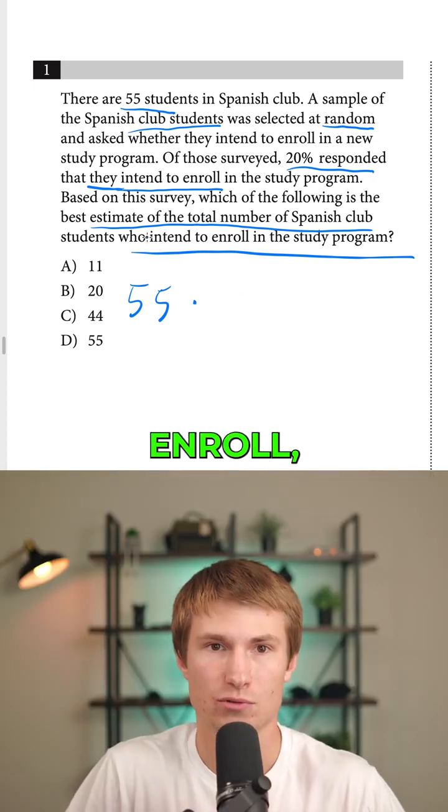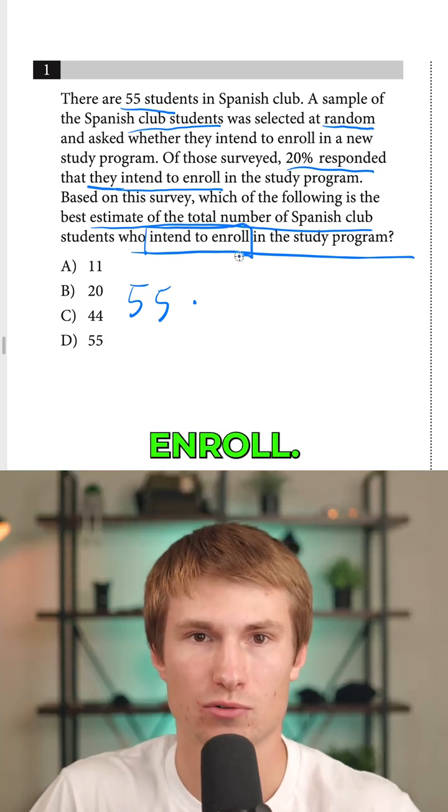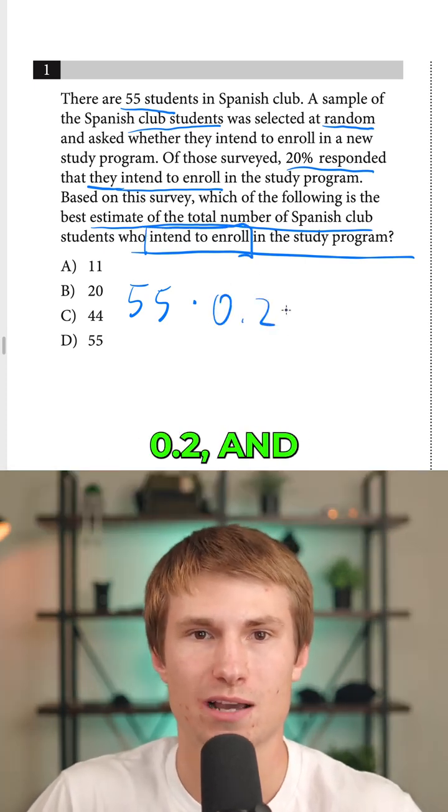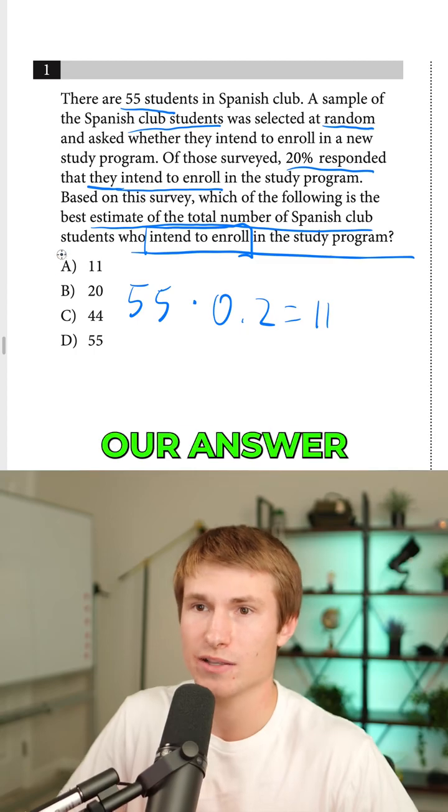We're asked for those who would intend to enroll. So all we have to do is 55 times 0.2, and that'll give us 11. So our answer would be A.